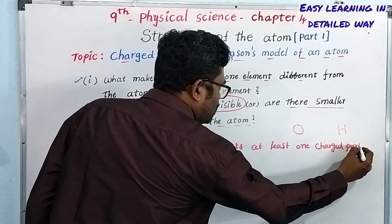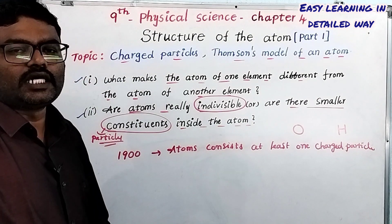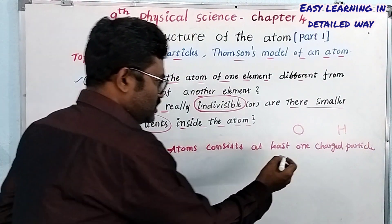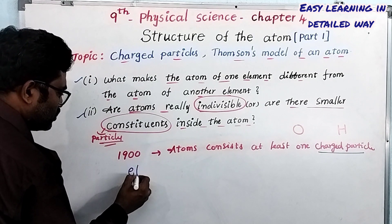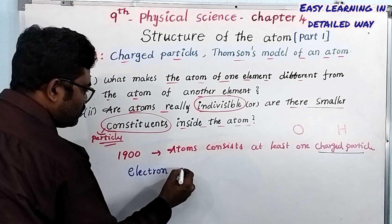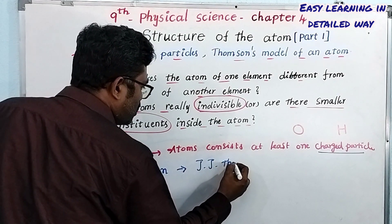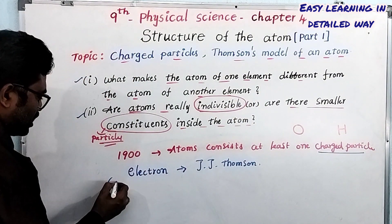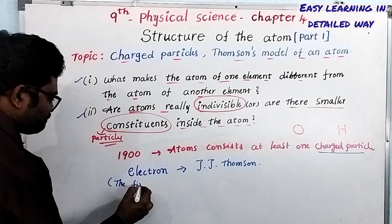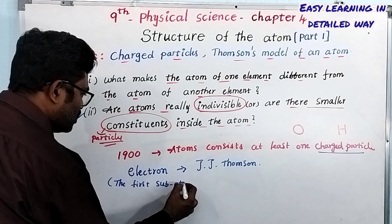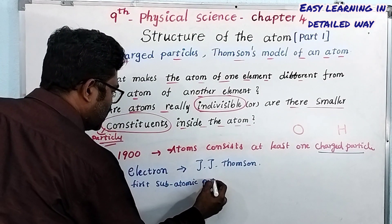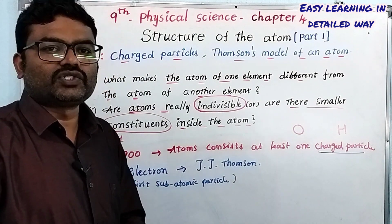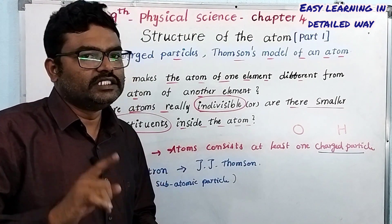This charged particle was discovered by J.J. Thomson. The first subatomic particle ever discovered is the electron, and it was discovered by J.J. Thomson.